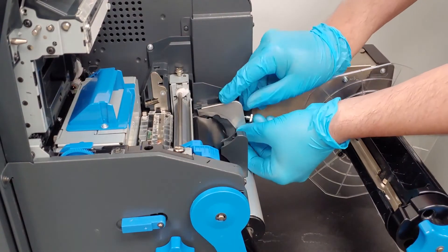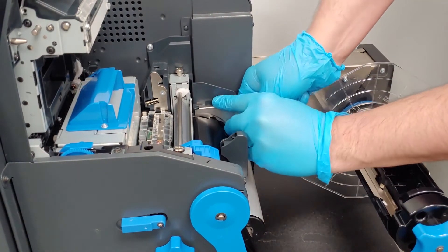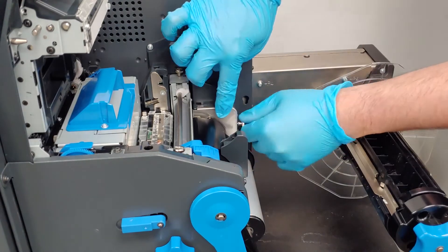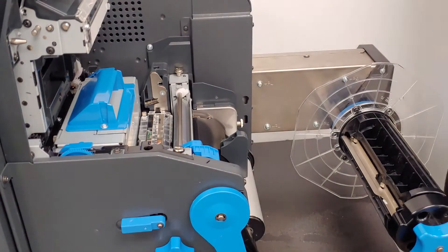Reinstall the inside paper guide and tighten the retaining screw by turning clockwise by hand. Do not use excessive force when tightening.